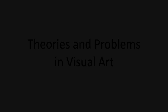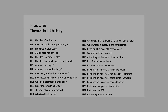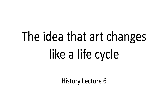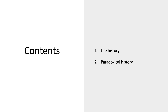Welcome to Theories and Problems in Visual Art. This is History Lecture Number 6: The Idea that Art Changes Like a Life Cycle. This is the last of three lectures on how art history is organized. Lecture 4 was on periods and mega-periods, Lecture 5 was on the idea that art history oscillates — that styles alternate or oscillate — and this one is about the idea that art changes like a life cycle, that it develops like a person's life. I've also added a last idea on paradoxical history.